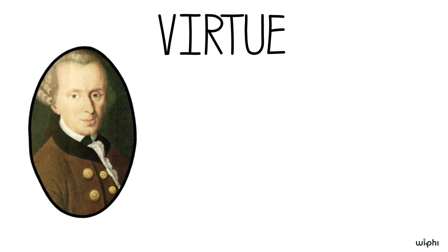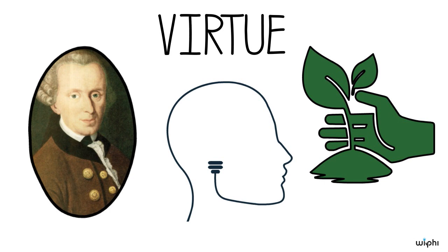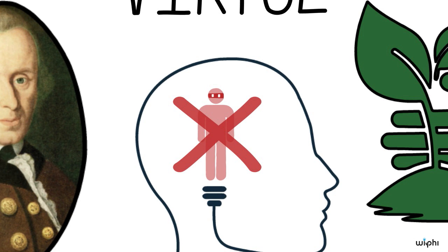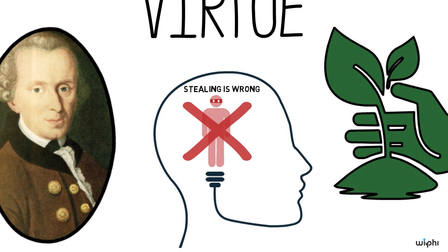Of these two components of the highest good, Kant's focus in his moral and political writings is on virtue and what individuals must do to cultivate a virtuous character. For Kant, virtue is the strength possessed by individuals to resist bodily inclinations and do what is right, simply because it is the right thing to do.